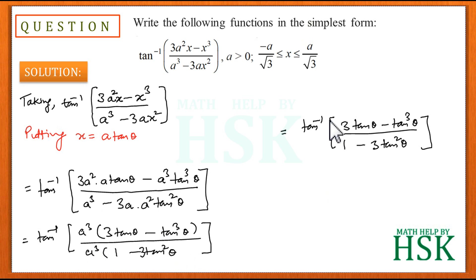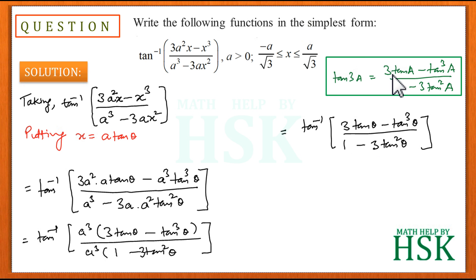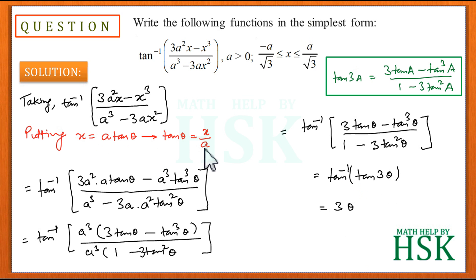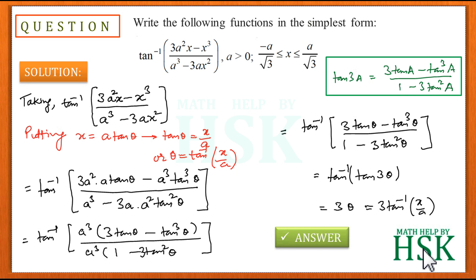Cancelling a cubed, I get tan inverse of (3 tan theta minus tan cubed theta) upon (1 minus 3 tan squared theta). Using the result tan 3A equals (3 tan A minus tan cubed A) upon (1 minus 3 tan squared A), this expression equals tan inverse of tan 3theta, which simplifies to 3 theta. Since x equal to a tan theta, tan theta equals x upon a, so theta equals tan inverse of x upon a. Therefore 3 theta equals 3 tan inverse of x upon a, which is the required answer.